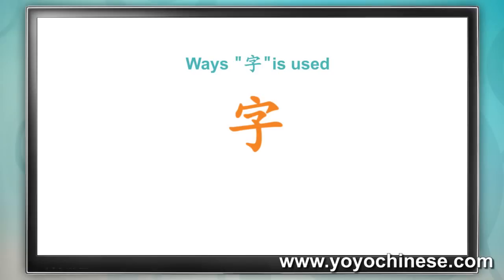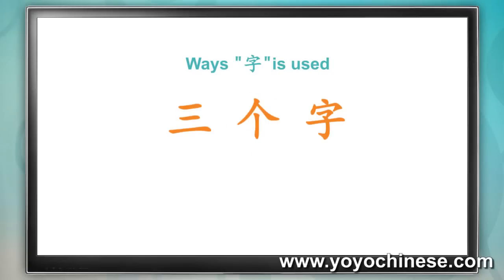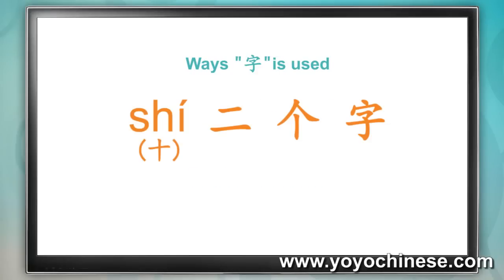Let's practice. Read this with me: 三個字. Great! You just read the phrase 'three characters.' Actually, you now know 十二個字 — twelve characters.